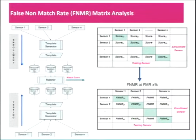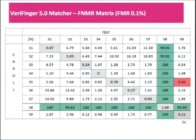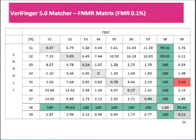Using the match scores, the false non-match rates were calculated for these native and interoperable data sets. The idea behind this matrix was to be able to see all these results in a single tabulated format. Along the diagonal you see all the native data set error rates — this is where enrollment and test images were captured using the same fingerprint sensor.